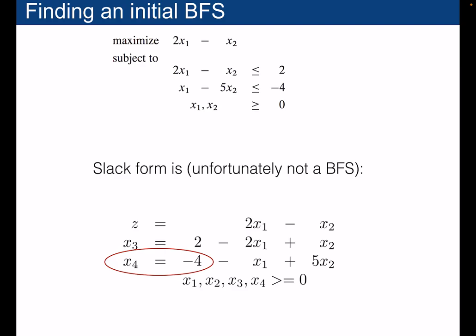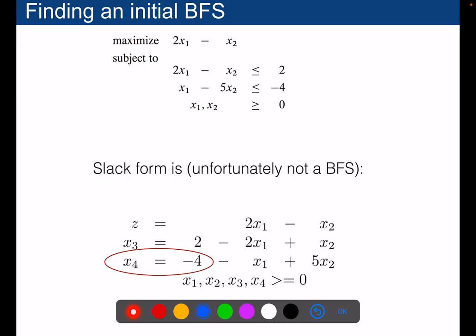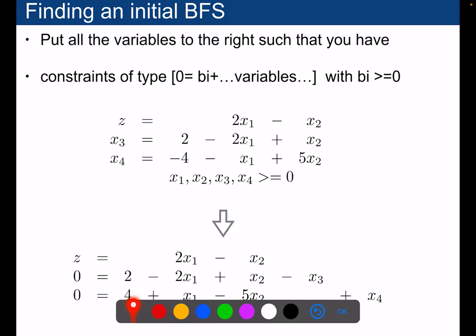I've assumed that starting with a basic feasible solution is an easy problem, but it's not always the case. If you take a problem in standard form and convert it into slack form, the solution you have may not be a basic feasible solution — for example, x4 equals minus 4, which violates the non-negativity constraint. So sometimes you don't have a basic feasible solution to start the simplex pivoting with. What we do is first solve a problem just to find a basic feasible solution and find one vertex of the set of feasible points inside the polytope.